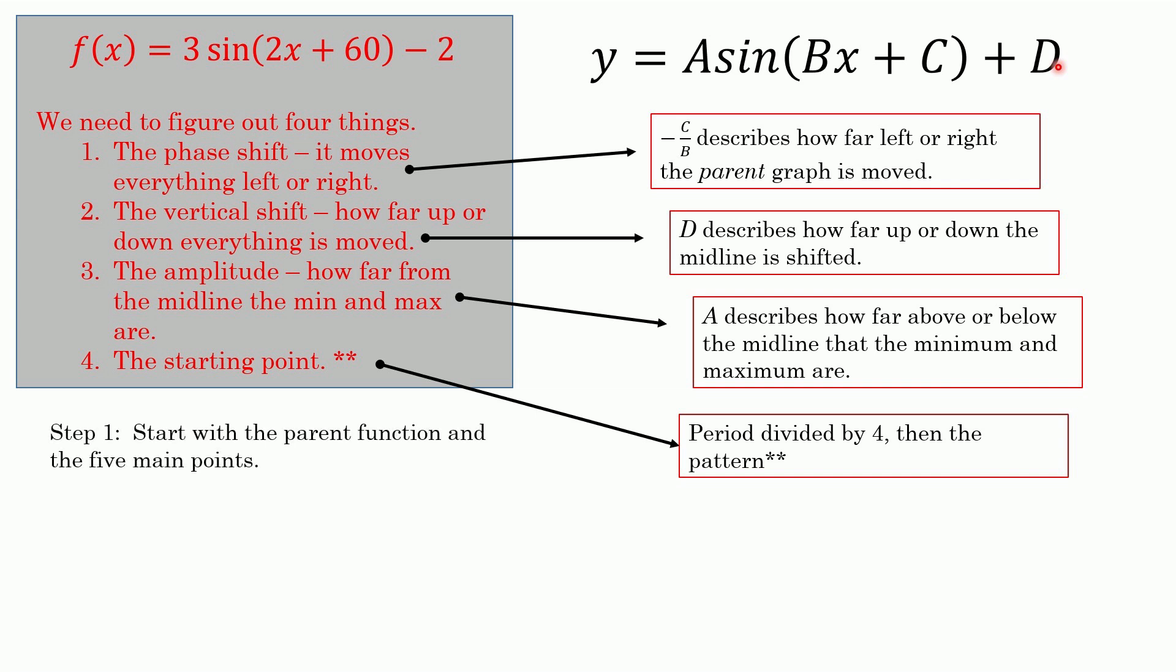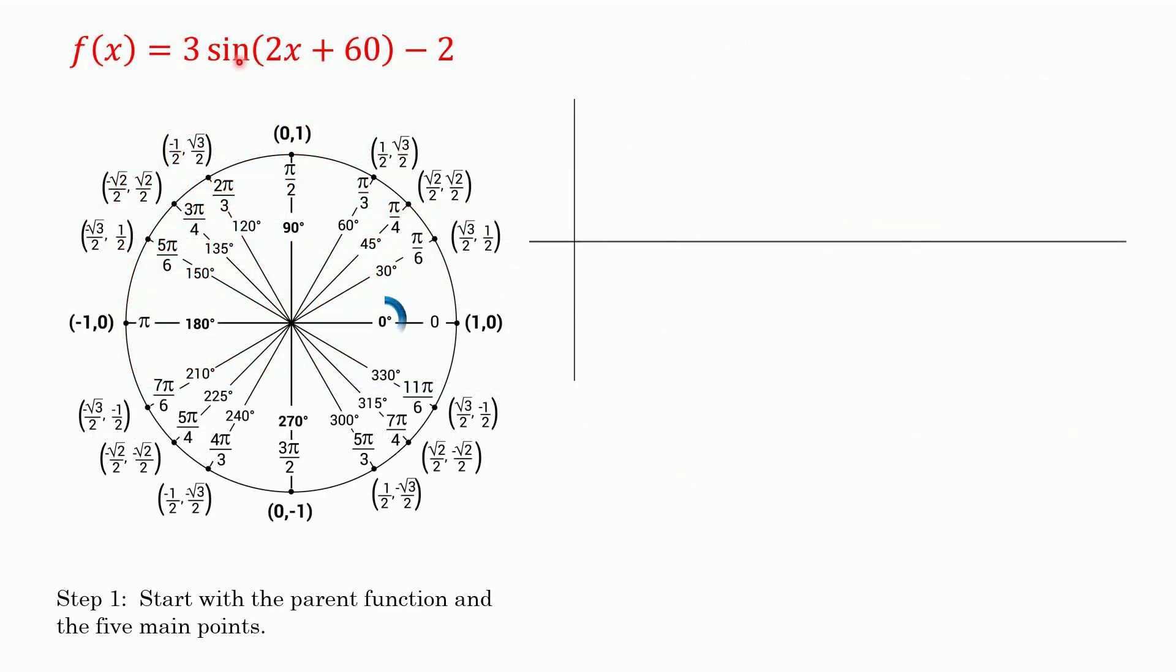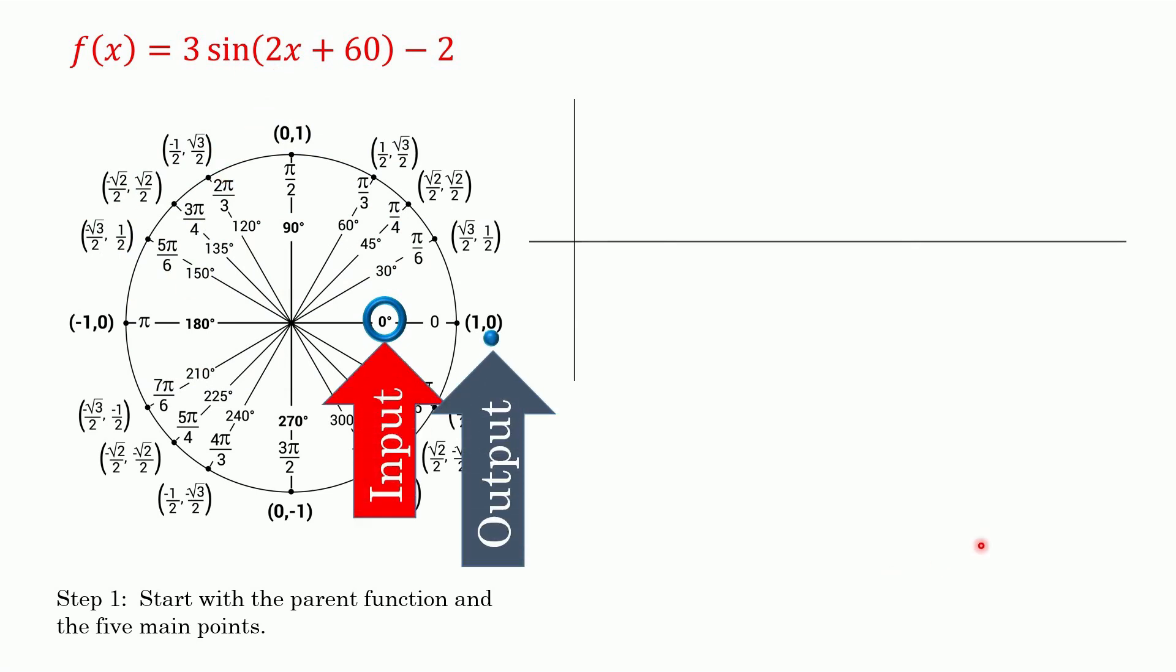First thing we're going to do is start with the parent function, like the basic old sine, or if this was cosine, we'd start with cosine. Since it's sine, we're going to make our x-axis. The x-axis is the input, the angle. The output is the sine of that angle. Here are all of our angles, and this will be our sine values right here for y. Since the sine of zero degrees is zero, we start off at zero, zero.